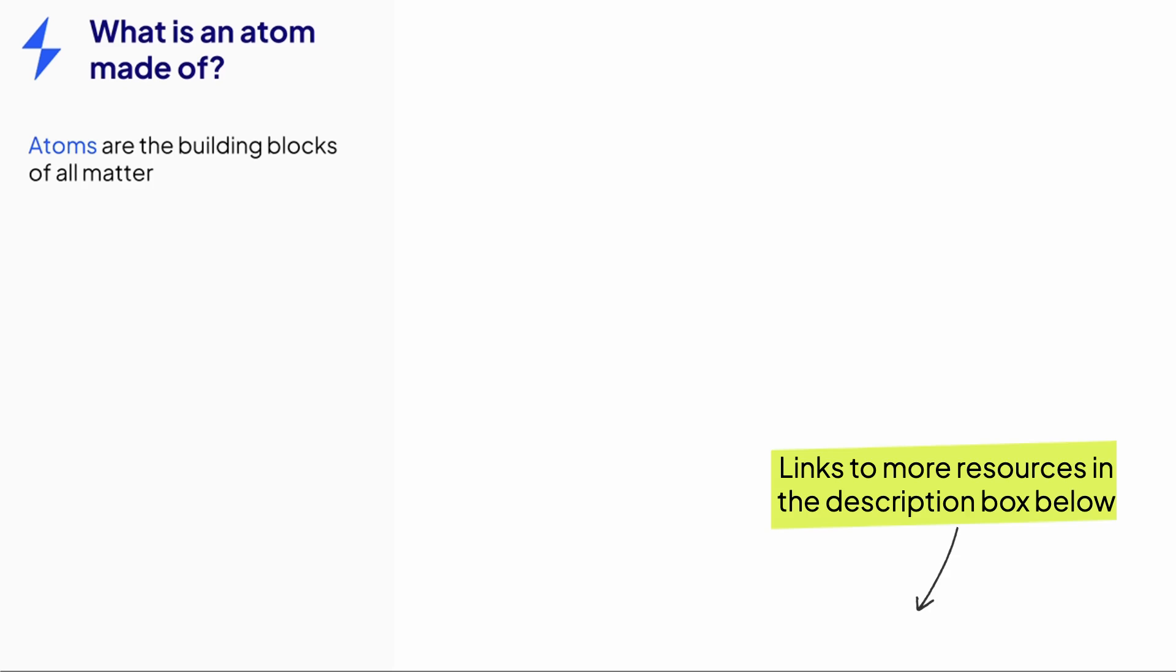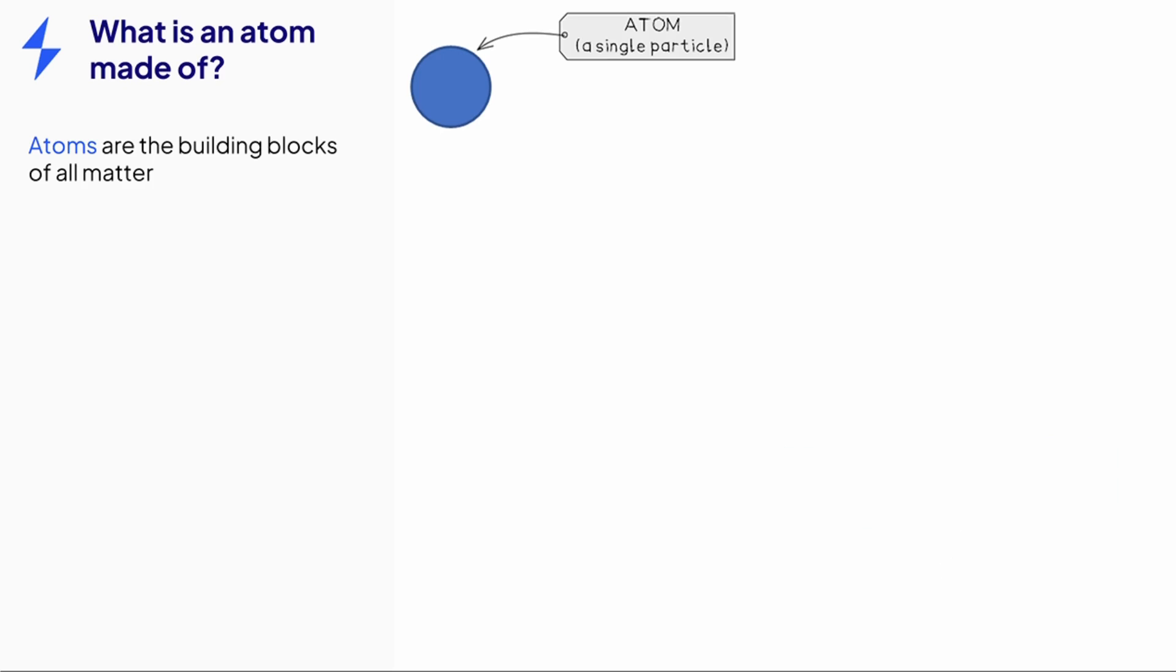Everything is made of atoms, but what are atoms made of? You've probably been using the word particles for atoms. An atom is the smallest single particle.